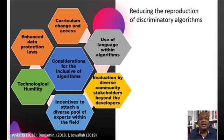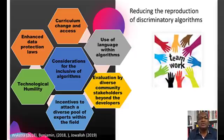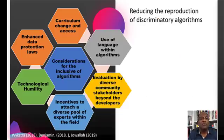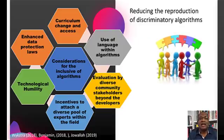Number three, algorithms developed should be evaluated by a diverse community of stakeholders beyond the developers and should include independent external reviewers. Number four, the relevant industry or industries should create incentives to attract a diverse pool of workers in this field. This would give greater vision for the development of non-discriminatory algorithms.